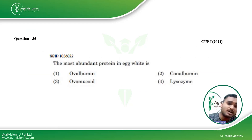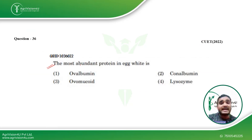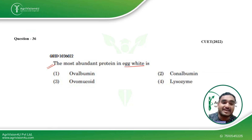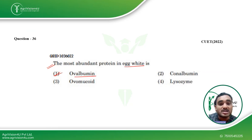The most abundant protein present in egg white — I mentioned in class that this is a very important question, and indeed it came in 2022 also — ovalbumin is the most abundant protein found in egg white.